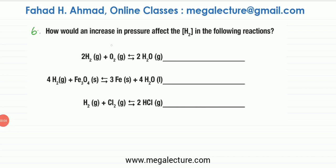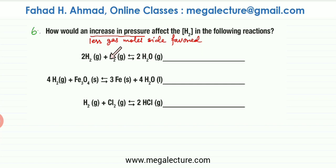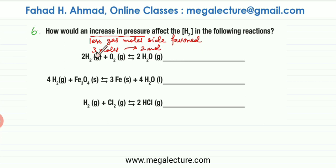Now the last question — question number six — asks: how would an increase in pressure affect H2O in the following reactions? Le Chatelier's principle states that if you increase pressure, the less gas mole side is favored. For the first reaction, there are three moles of gas in the reactants (two H2 and one O2) and two moles of gas in the products. So the forward reaction is favored, meaning H2 gets used up and converted into H2O. So H2 concentration decreases.